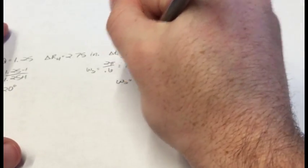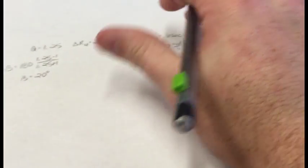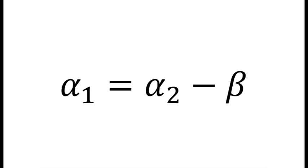To continue solving the problem, you must choose an arbitrary alpha 2 angle. In this case, we will choose alpha 2 equal to 30 degrees. Using alpha 2 and beta, we can find alpha 1 using the following: Alpha 1 equals alpha 2 minus beta.